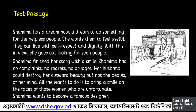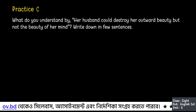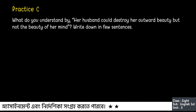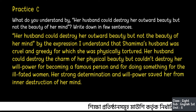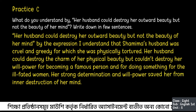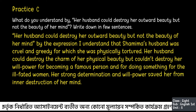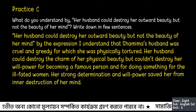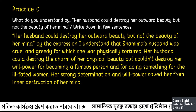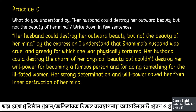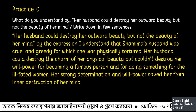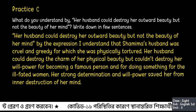What do you understand by the expression: her husband could destroy her outward beauty, but not the beauty of her mind? By this expression I understand that Shamima's husband was cruel and greedy, for which he physically tortured her. Her husband could destroy the charm of her physical beauty, but could not destroy her willpower for becoming a famous person and for doing something for the ill-fated women. Her strong determination and willpower saved her from inner destruction of her mind.